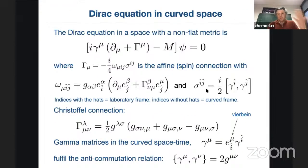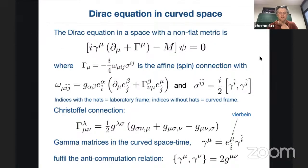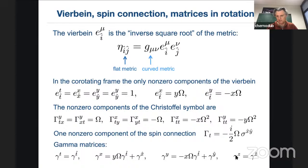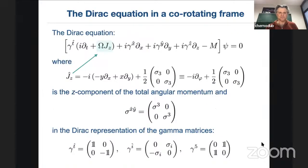We write the Dirac equation in this curved spacetime — it's standard: we have a spin connection, we define Christoffel symbols in terms of the vierbein. It's standard technique. We write the Dirac equation for the system, define the vierbein as the square root of the metric — there is some freedom in definition — and choose suitable coordinates for rotation, finding the non-zero components of the Christoffel symbols and identifying gamma matrices in this plane.